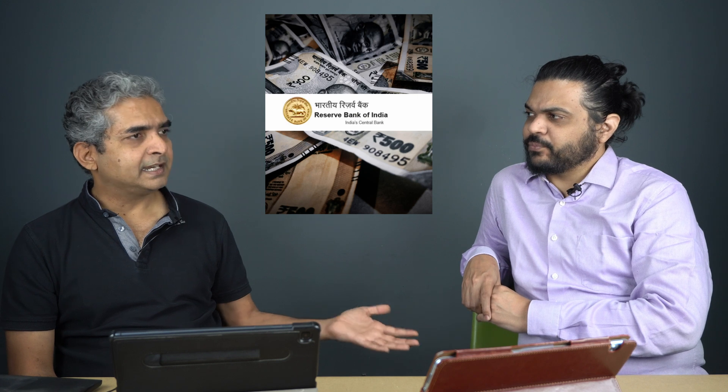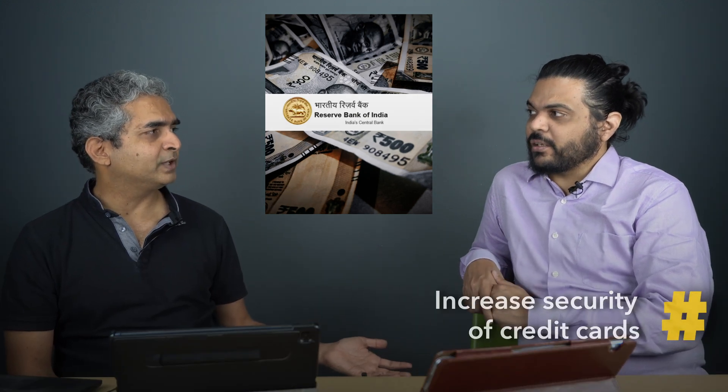This is why, for example, Indian government, RBI, has decided that they want to increase security of credit cards. So because of that, we have all kinds of OTPs and no recurring transactions. And all over India, people are complaining because now they cannot sign up for Apple TV's monthly subscriptions. Forget Apple TV. Netflix. Netflix is working now. But initially there was a problem setting up a subscription for Netflix also. And YouTube's premiums.